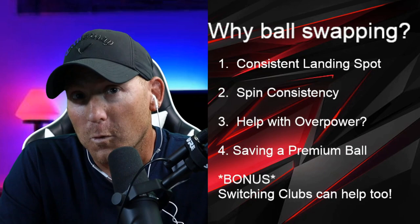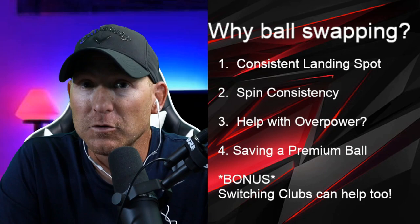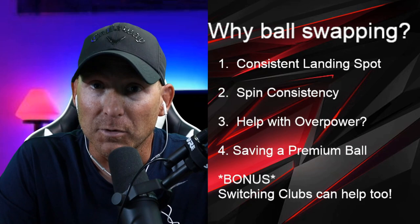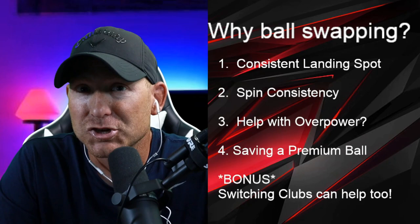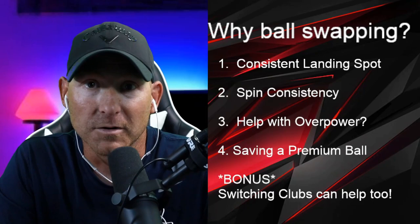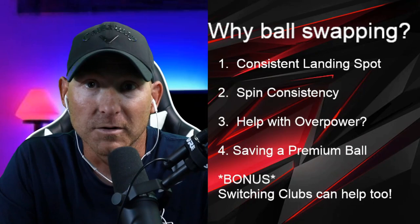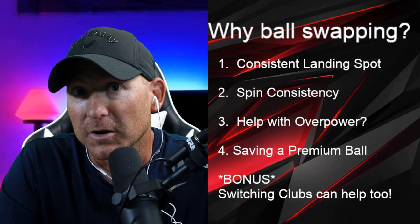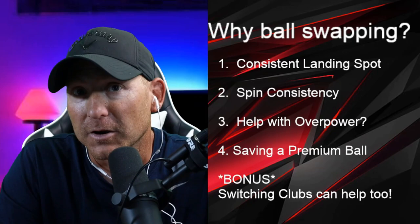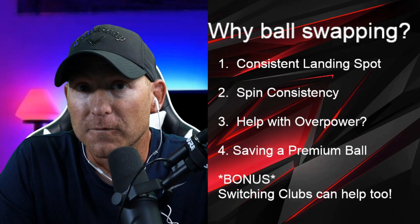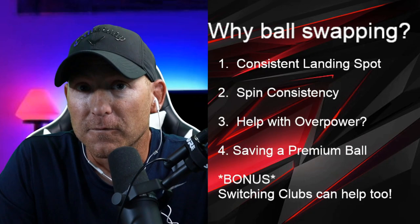The second reason is spin consistency. There are balls that only have one side spin, but maybe we need to use a ball with two side spin. We can set up with a side spin one ball, confirm we have exactly one bar of side spin, then switch to a ball with two side spin — without worrying about whether we accidentally got 1.1 bars or something unpredictable.